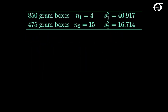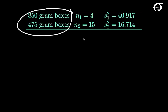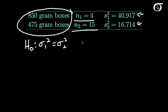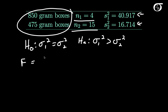Here's some data collected on 850 gram and 475 gram cereal boxes. There's a sample of size 4 of 850 gram boxes and 15 of the 475 gram boxes. The cereal was weighed without the box and without the bag, yielding sample variances. Our F statistic is the ratio of the sample variances: S1 squared of 40.917 over S2 squared of 16.714, which equals 2.448 to three decimal places.